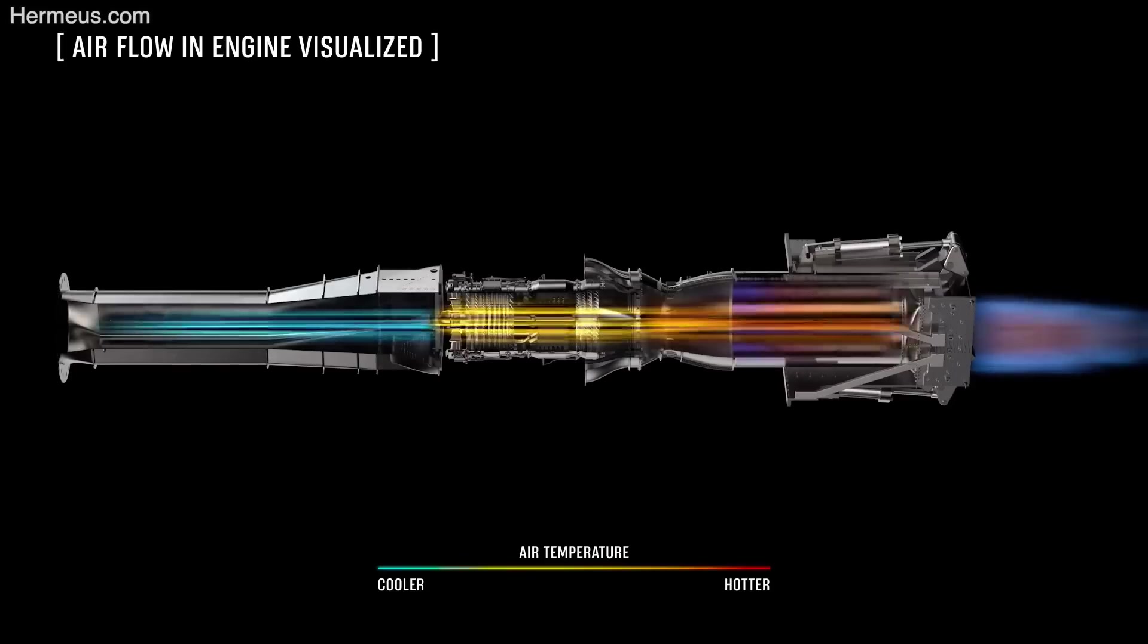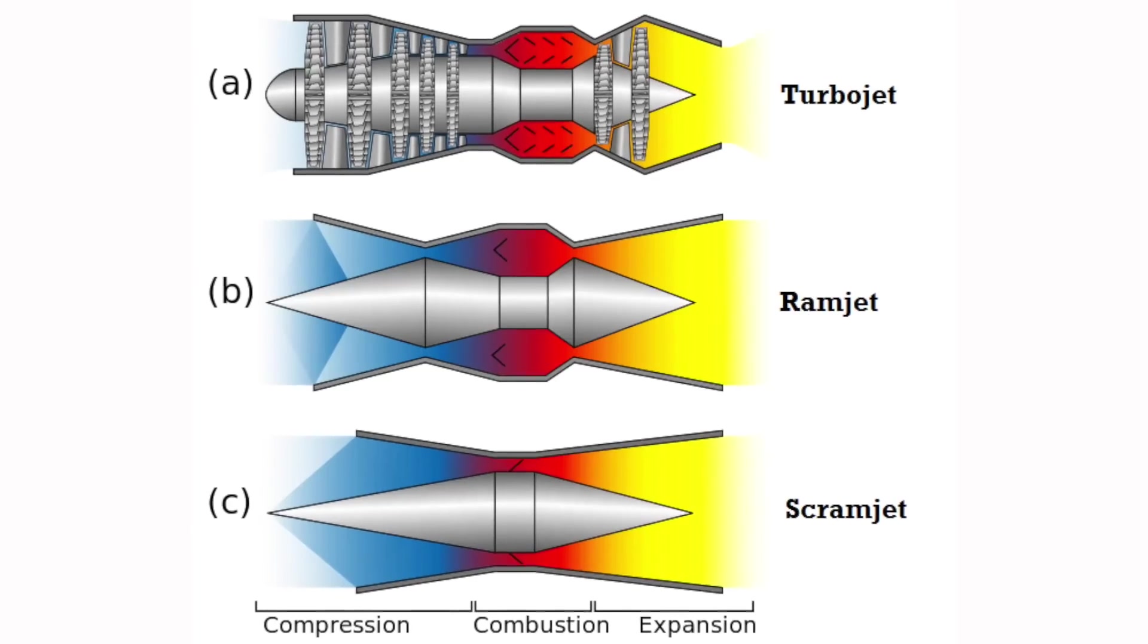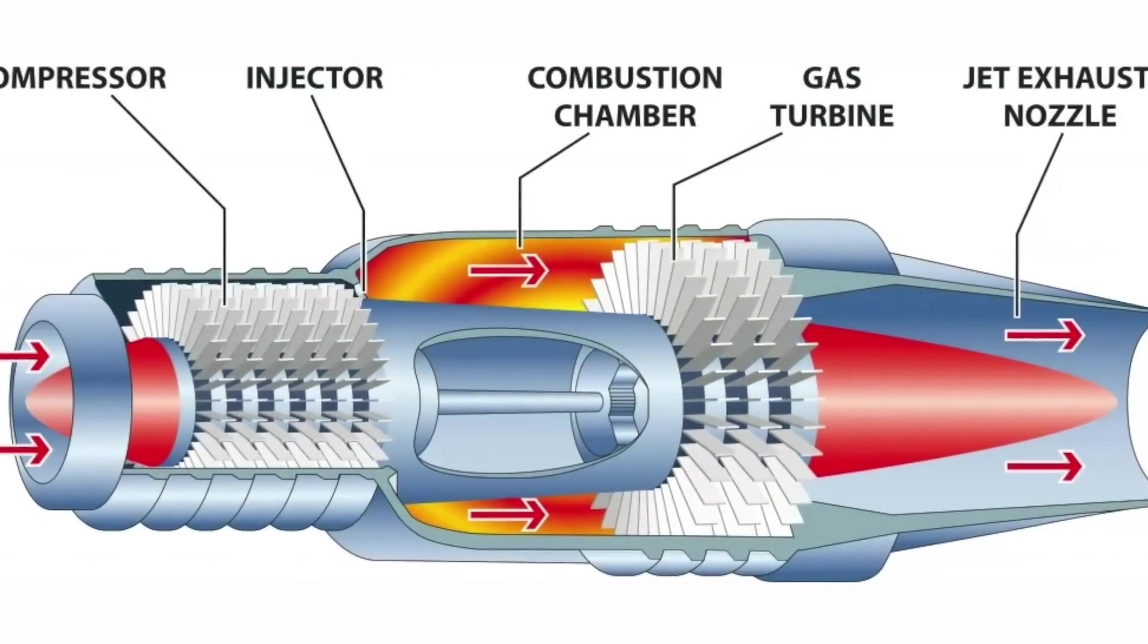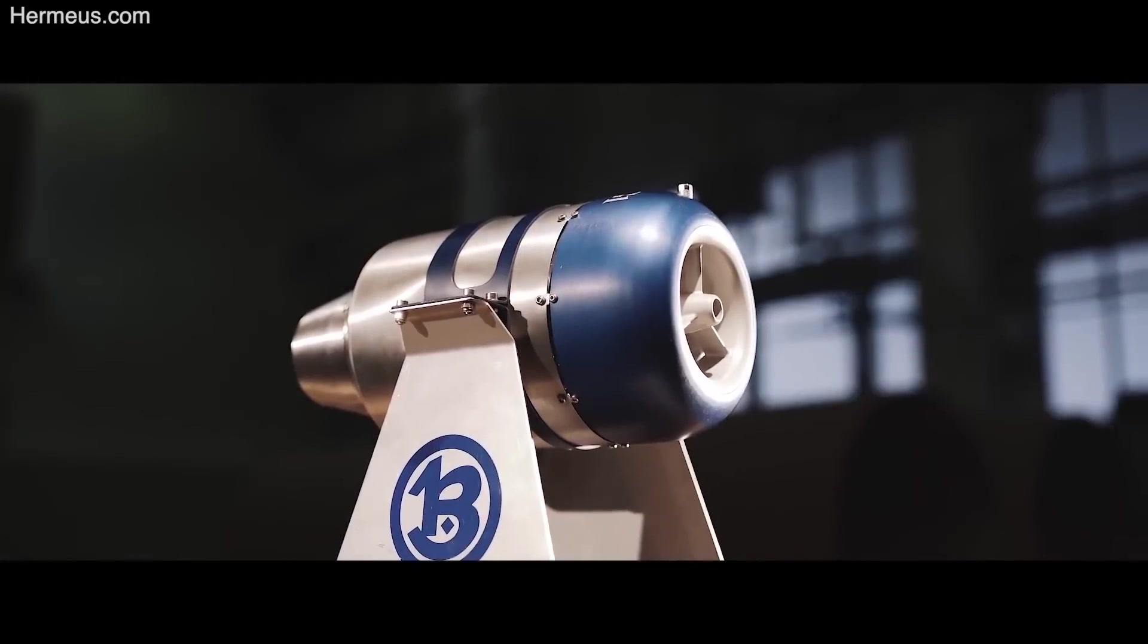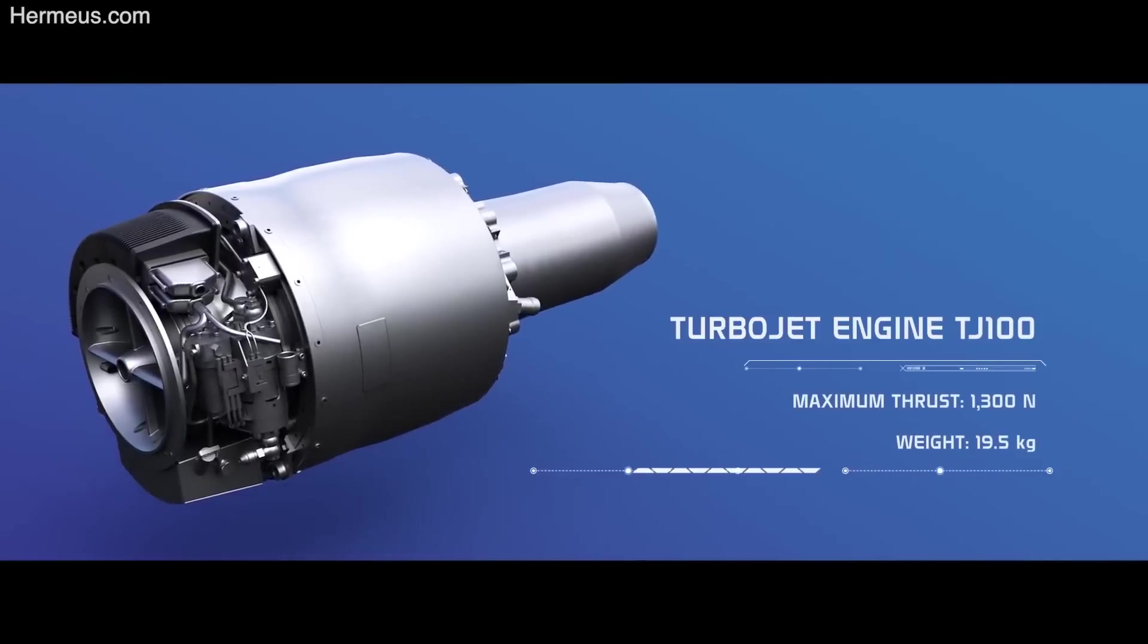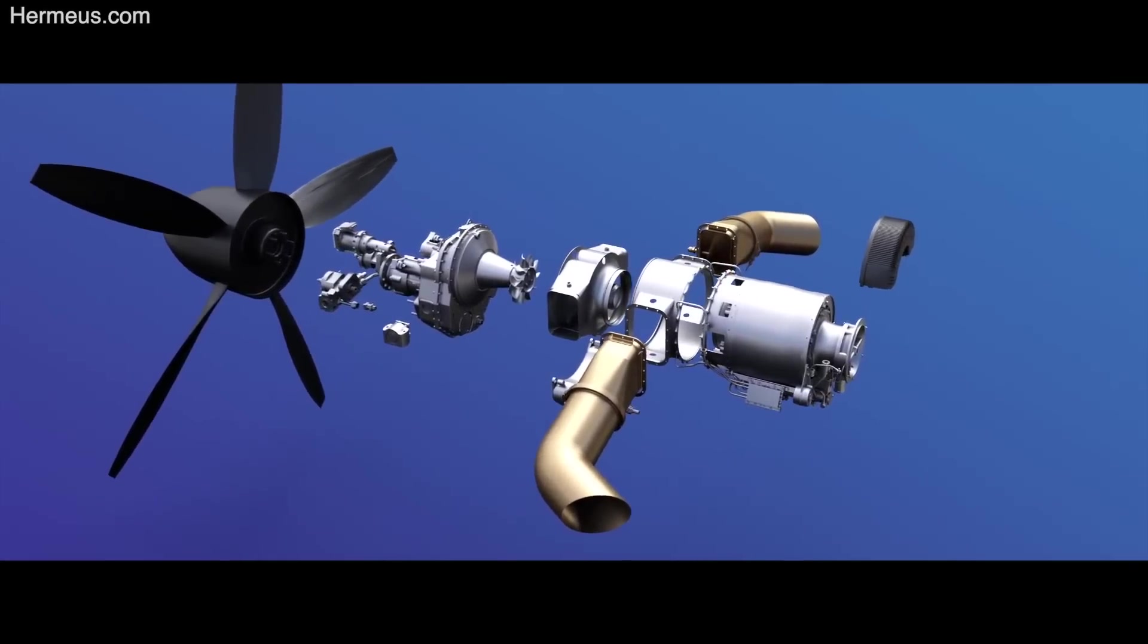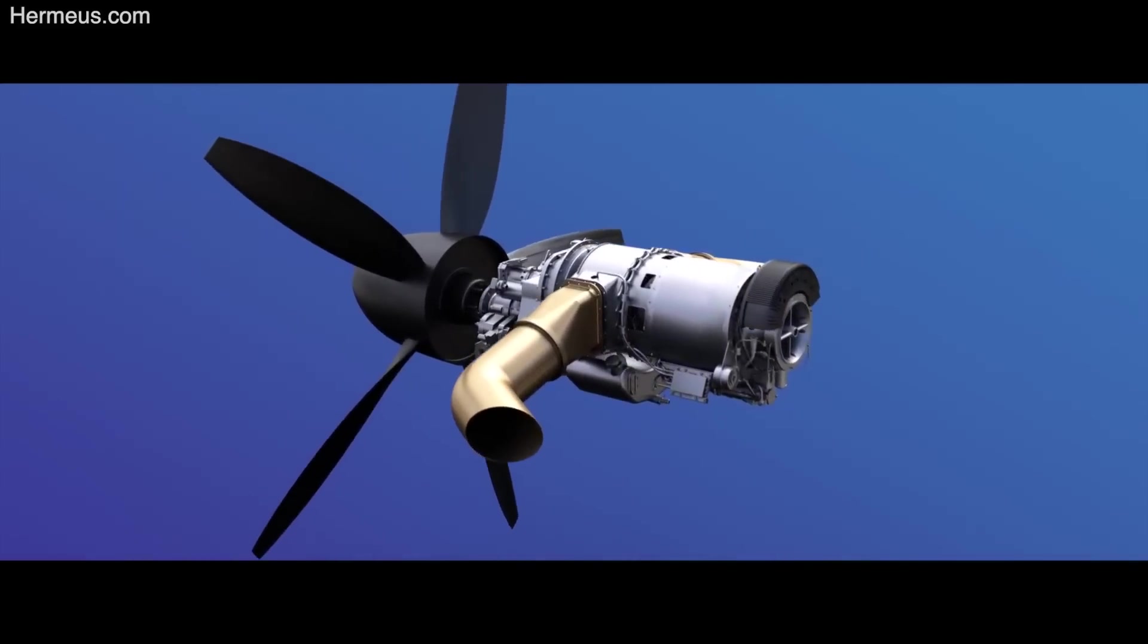The Hermes concept relies on a TBCC engine that incorporates a ramjet instead of a supersonic combustion ramjet or scramjet. Initial testing of a small-scale prototype in 2019 and 2020 used a production 290-pound thrust TJ-100 turbojet engine supplied by Czech high-speed turbine manufacturer PBS. The combined cycle elements include a pre-cooler of their own design and a ramjet engine.